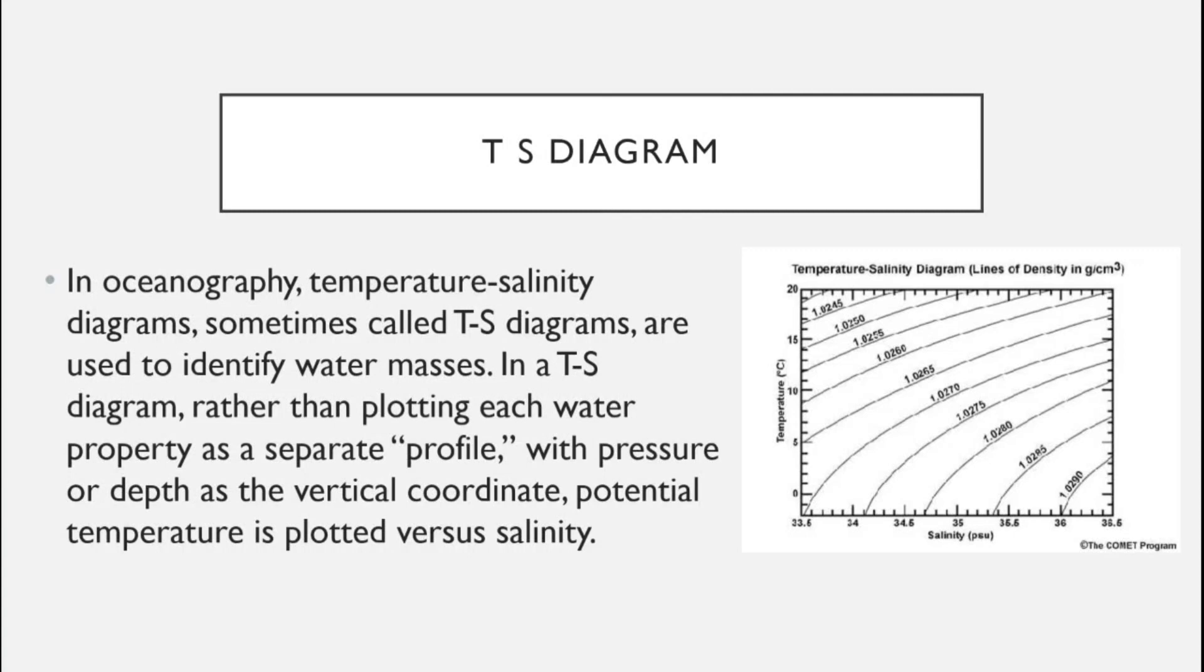Here in the diagram you can see temperature on one side and salinity on the other side. TS diagram is a very important concept where pressure or depth is used as a vertical coordinate, and it shows how we observe temperature and salinity in the ocean.